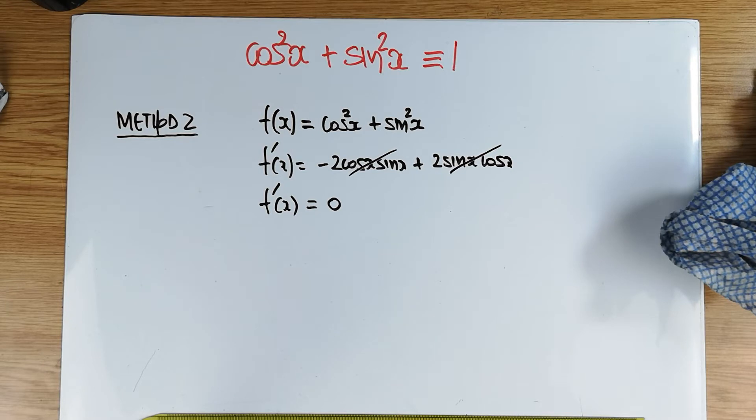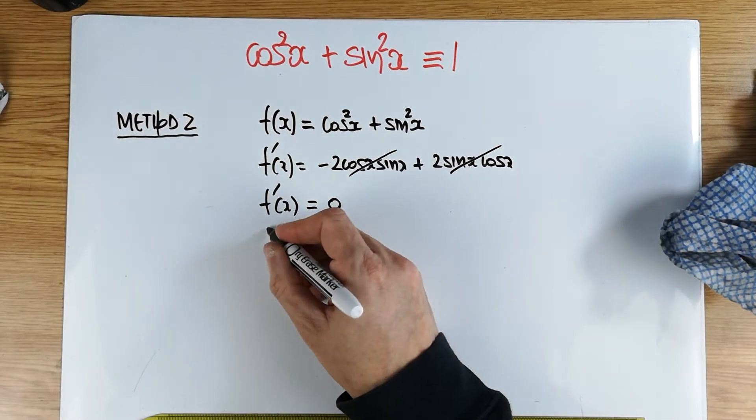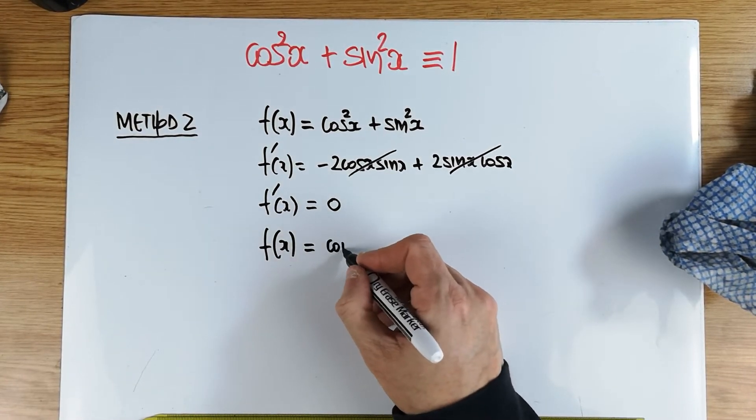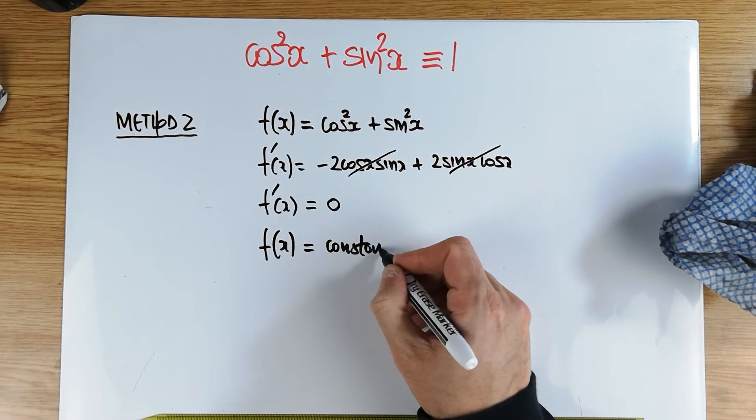So that means this particular function has a zero differential, which is independent of x. In other words, its gradient is always zero. What does that mean? Well, what it means simply is that your f of x is in fact a constant. It's a constant function.